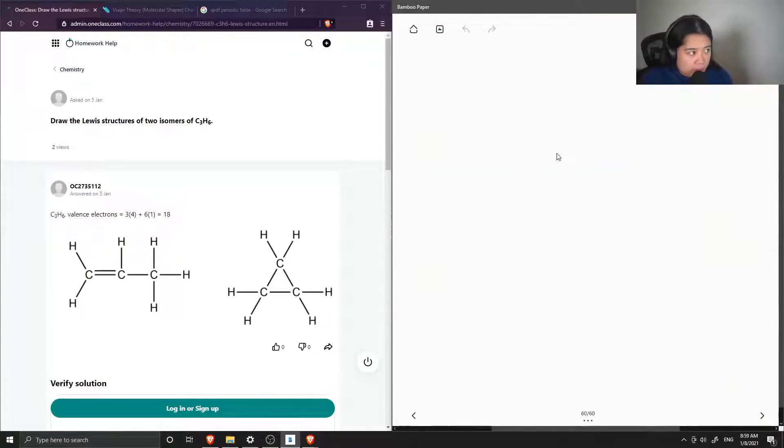Question number three is to draw the Lewis structures of two isomers of C3H6.